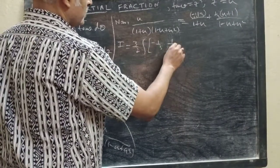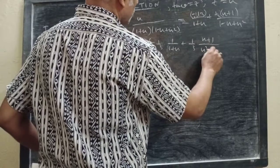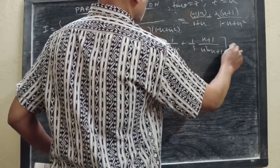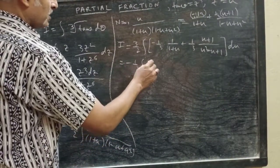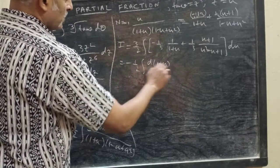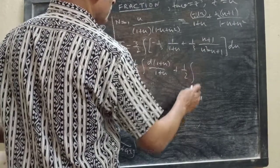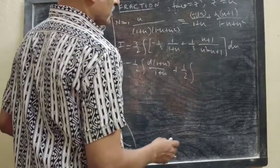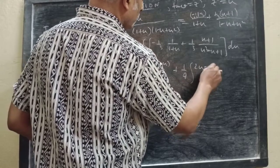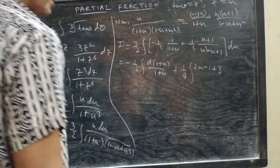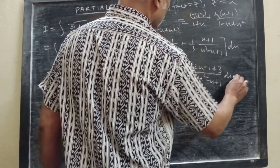I is (3/2) ∫ [−(1/3)/(1 + u) + (u/3 + 1/3)/(u² − u + 1)] du. This can be written as −(1/2) ∫ d(1+u)/(1+u) + (1/4) ∫ (2u − 1) du/(u² − u + 1) plus (3/4) ∫ du/(u² − u + 1).